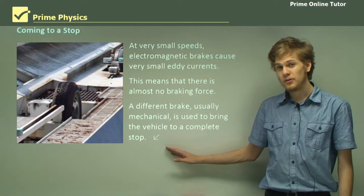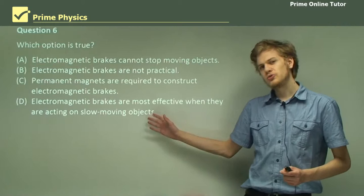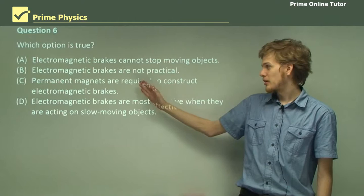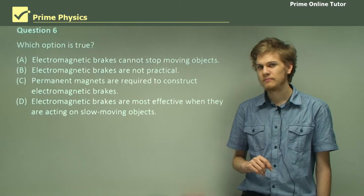That's the end of the theory, so let's go into some questions to test your knowledge. Question 6: Which option is true? Electromagnetic brakes cannot stop moving objects. Electromagnetic brakes are not practical. Permanent magnets are required to construct electromagnetic brakes. Or electromagnetic brakes are most effective when acting on slow moving objects.